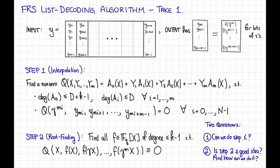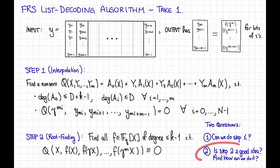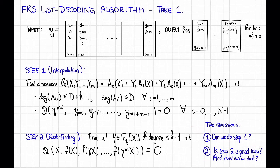As usual, we're going to answer question 1 by counting coefficients and counting constraints. And we're going to answer question 2 — at least the first part, is step 2 a good idea — by asserting that low-degree polynomials do not have too many roots. So let's answer these two questions now, starting with question 1.